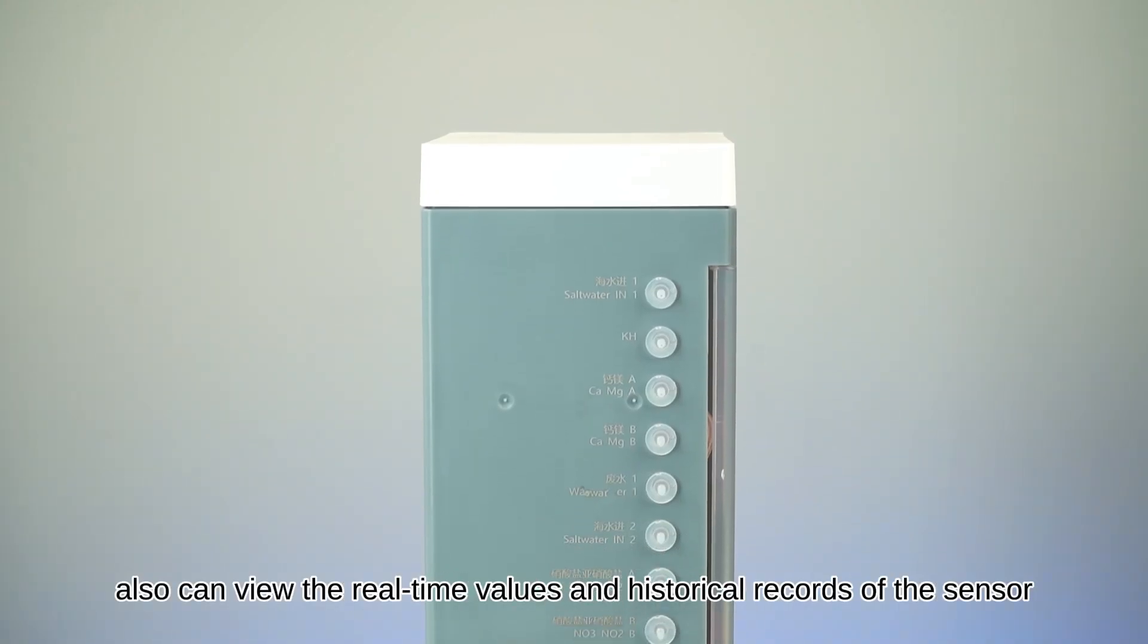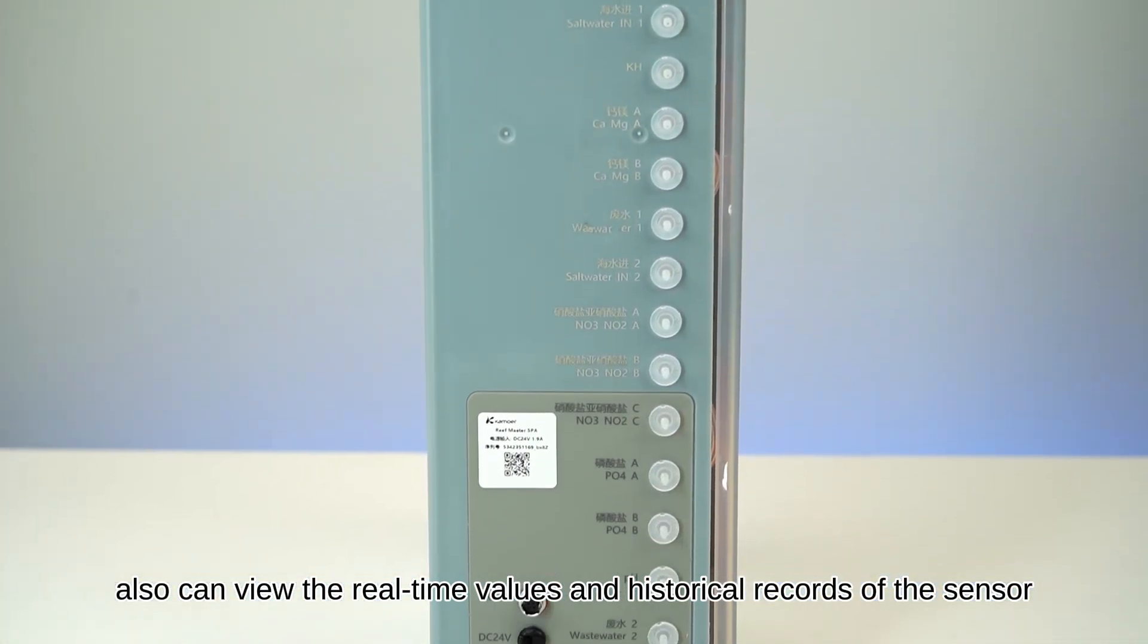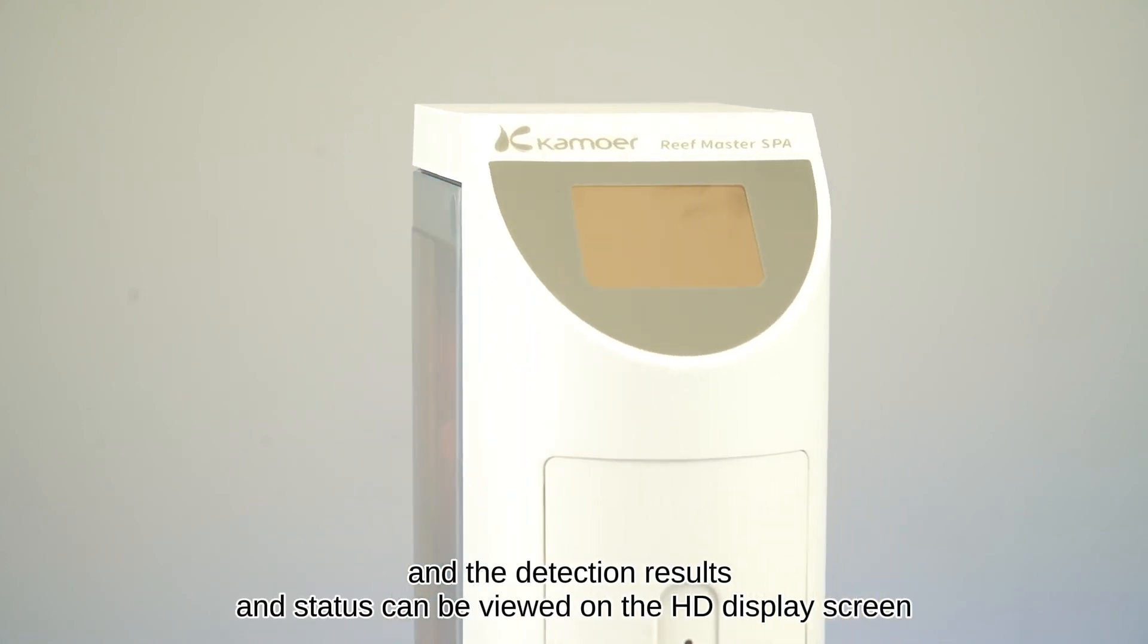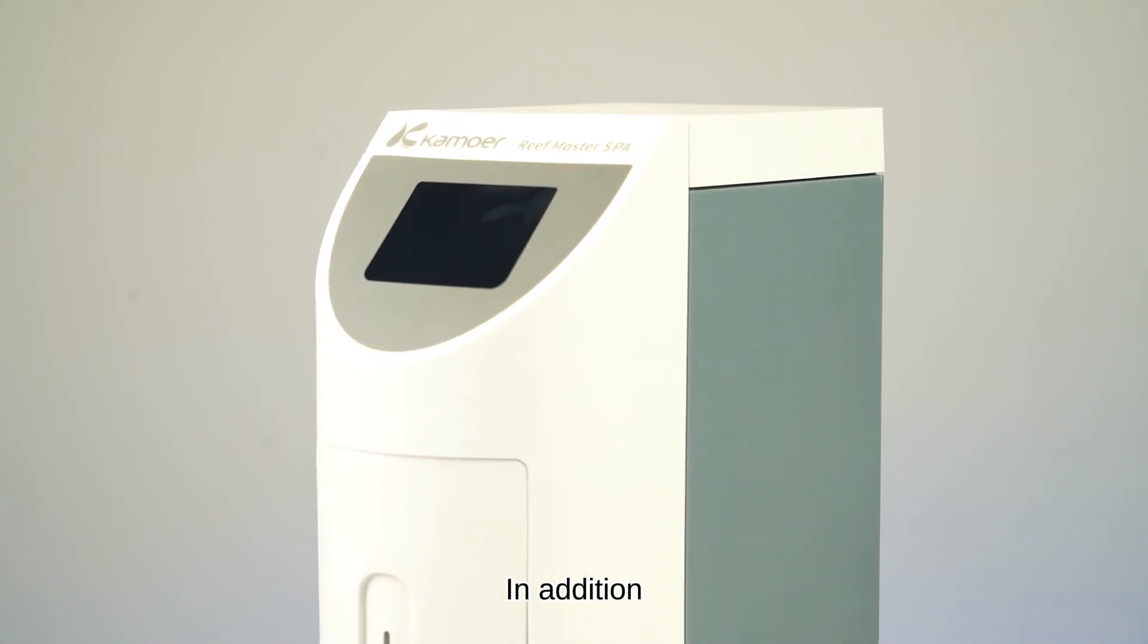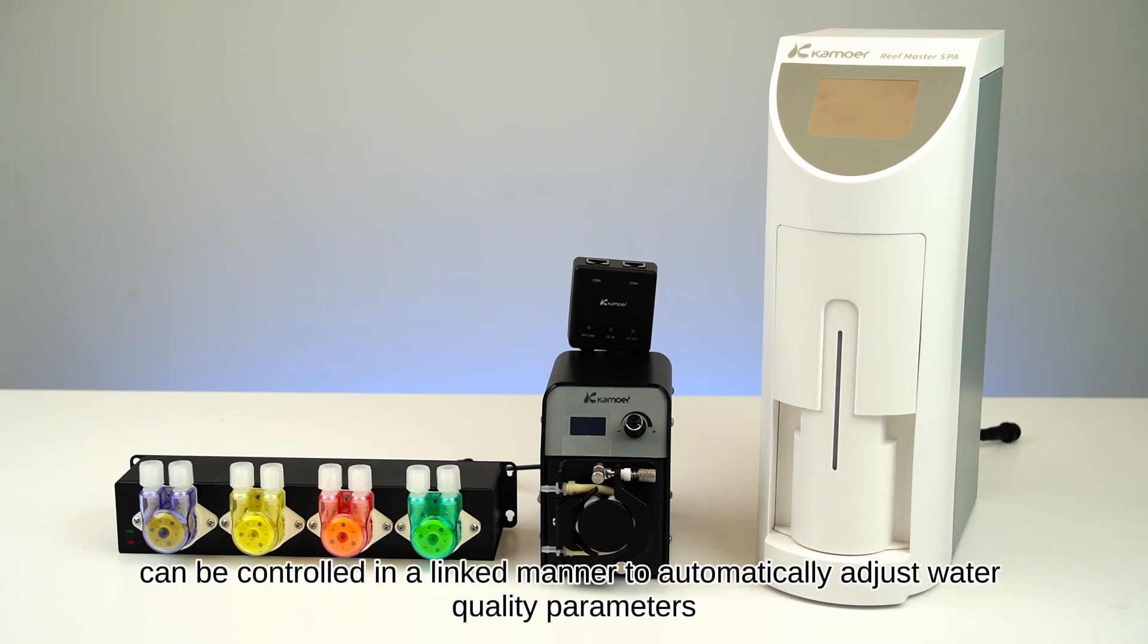Camor Remote also can view the real-time values and historical records of the sensor. Alarms for abnormal detection values are pushed, and the detection results and status can be viewed on the HD display screen. In addition, Dosen Pump F4 Pro and Calcium Reaction Pump FX-STP can be controlled in a linked manner to automatically adjust water quality parameters.